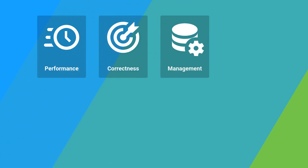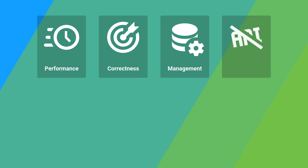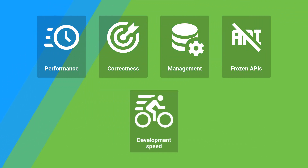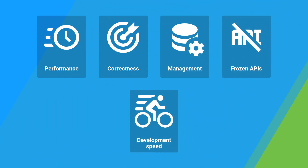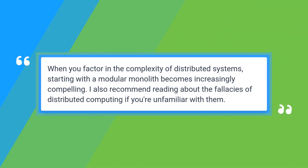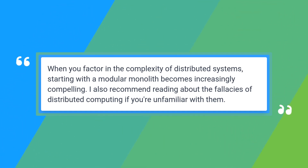Management: we have to manage multiple different applications, each with its release schedule. Frozen APIs: once an API is established, it becomes hard to change without breaking any existing API consumers. Development speed: making a change in one microservice may affect many other microservices, which requires carefully planning deployments. When you factor in the complexity of distributed systems, starting with a modular monolith becomes increasingly compelling.